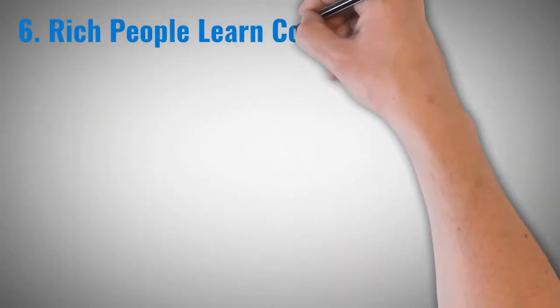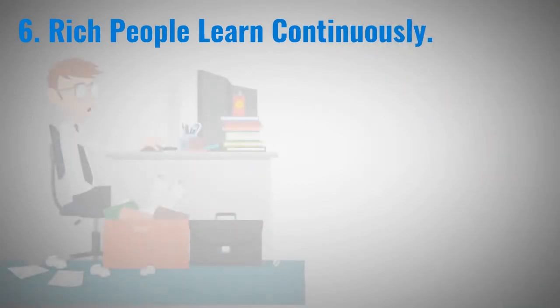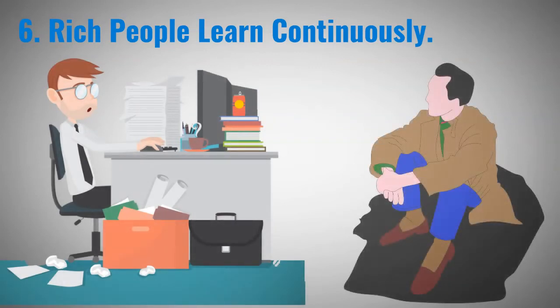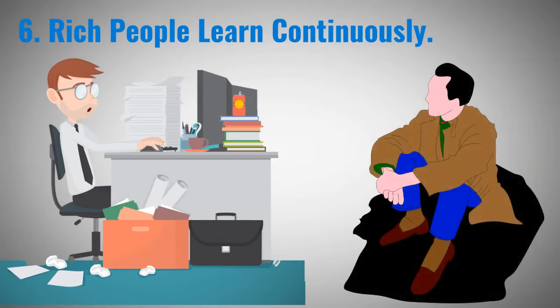Rich people learn continuously. Rich people keep on learning because they know more knowledge brings more opportunities. They need to know how to improve themselves so they can make fewer mistakes. Poor people think they are perfect and don't need to know more. And it's this mindset that makes them remain poor without improving on themselves.